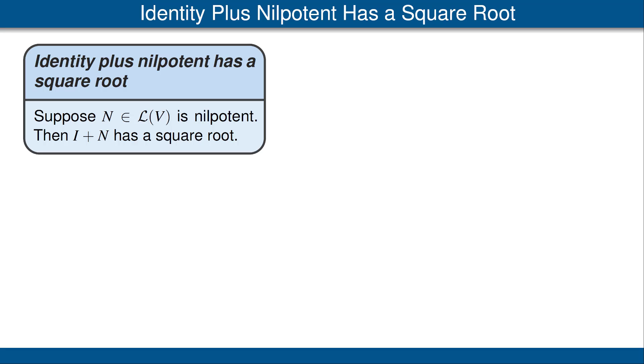The result says the following. Suppose N is a nilpotent operator on our vector space V. Then the identity plus N has a square root. This result has an interesting proof, which we now turn to.